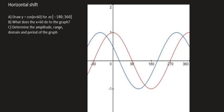And so here we can see we have the red graph, which is the original cos graph. And then the blue one is the new one, which has been moved 60 degrees left.